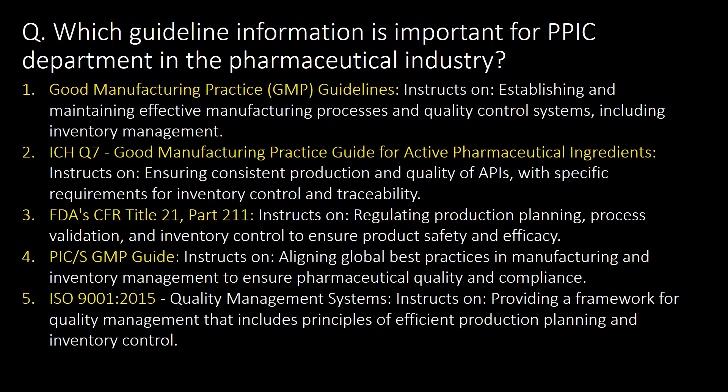Which guideline information is important for the PPIC department in the pharmaceutical industry? Five important guidelines are: first, Good Manufacturing Practice (GMP) guidelines; second, ICH Q7; third, FDA CFR Title 21; fourth, PIC/S guidelines; and fifth, ISO 9001:2015.